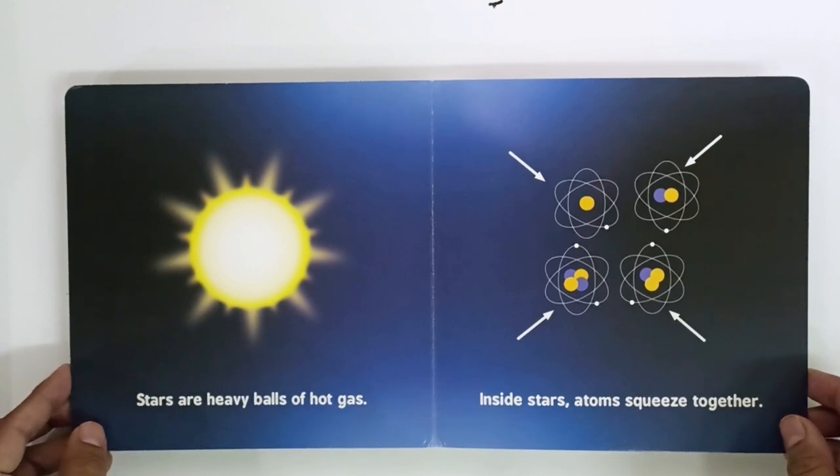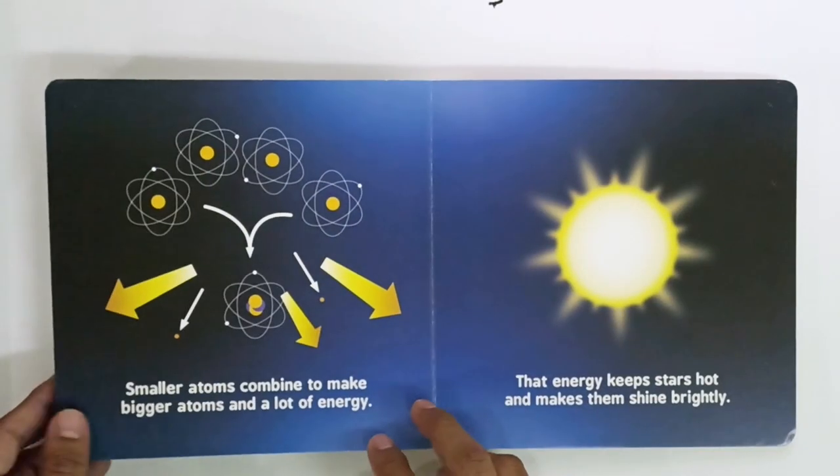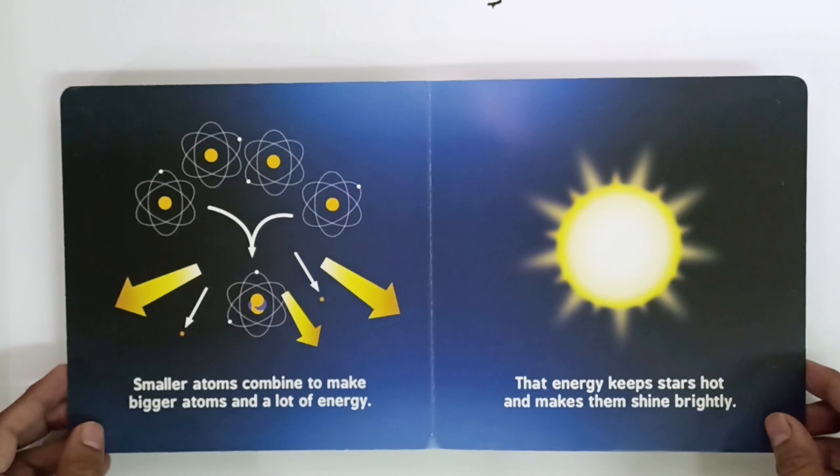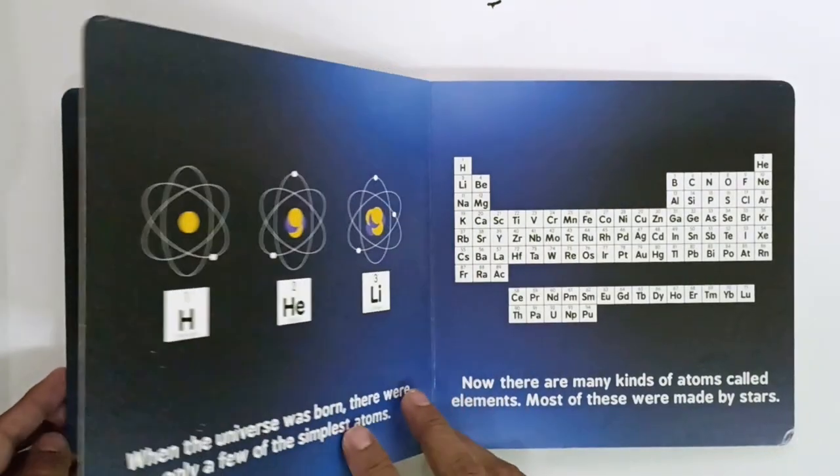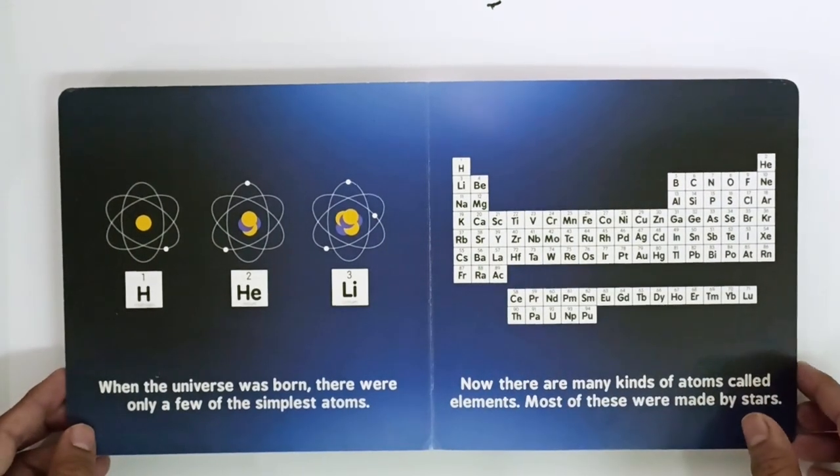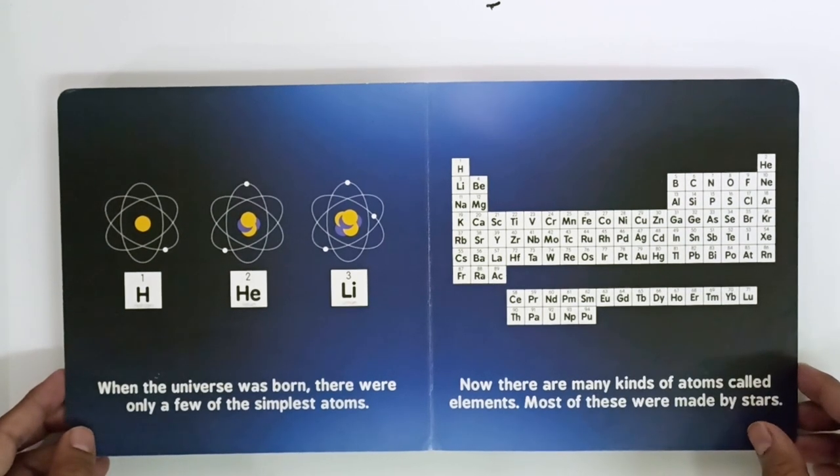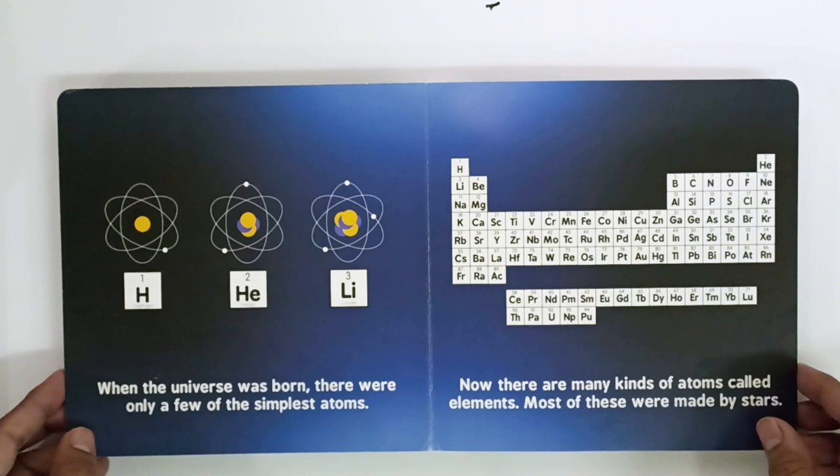Stars are heavy balls of hot gas. Inside stars, atoms squeeze together. Smaller atoms combine to make bigger atoms and a lot of energy. That energy keeps stars hot and makes them shine brightly.